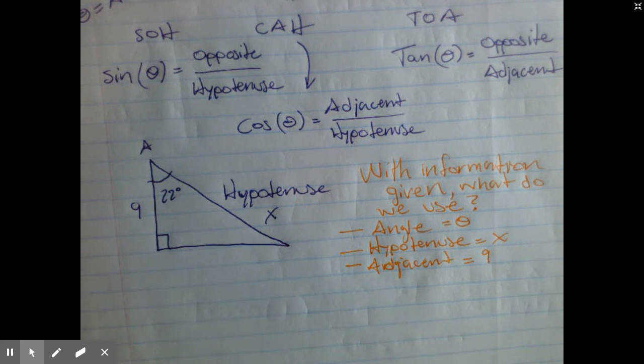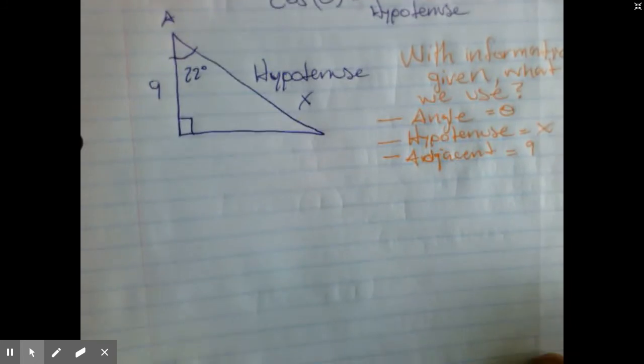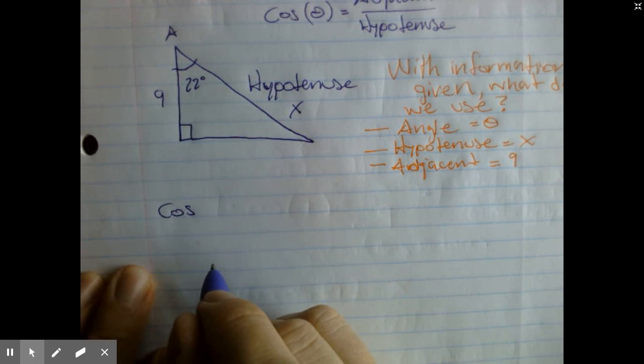With the information that we are given, I'm going to use cosine. So cosine of the angle, which is 22 — cosine of 22 — is going to equal the adjacent, which is 9, over the hypotenuse, which is X.